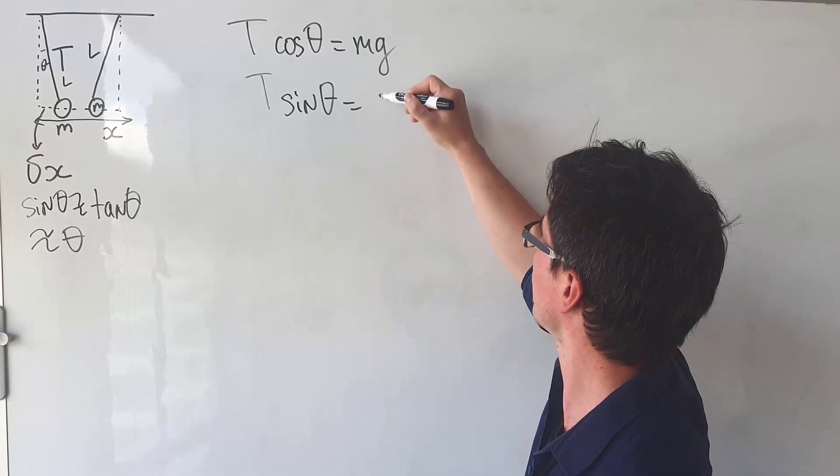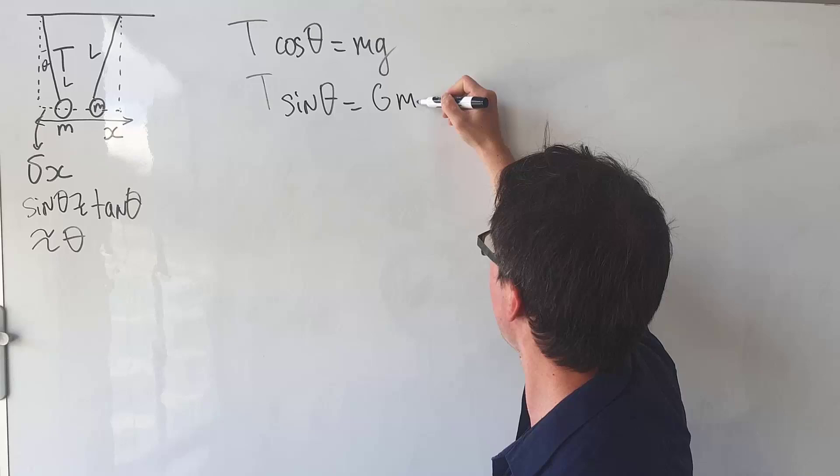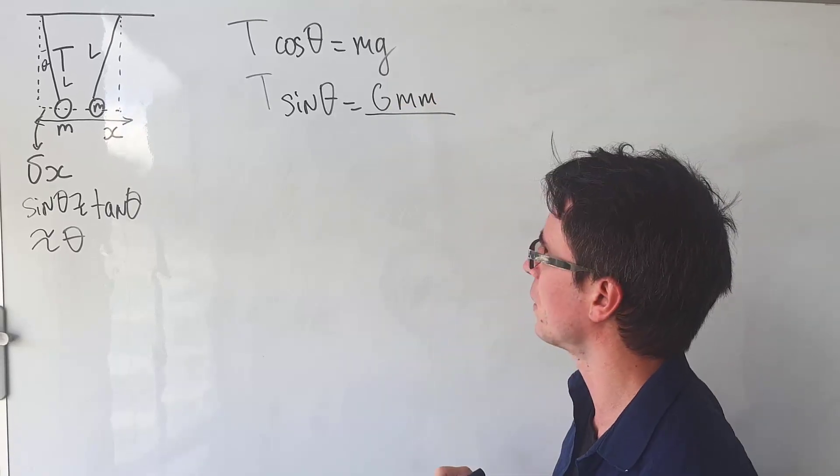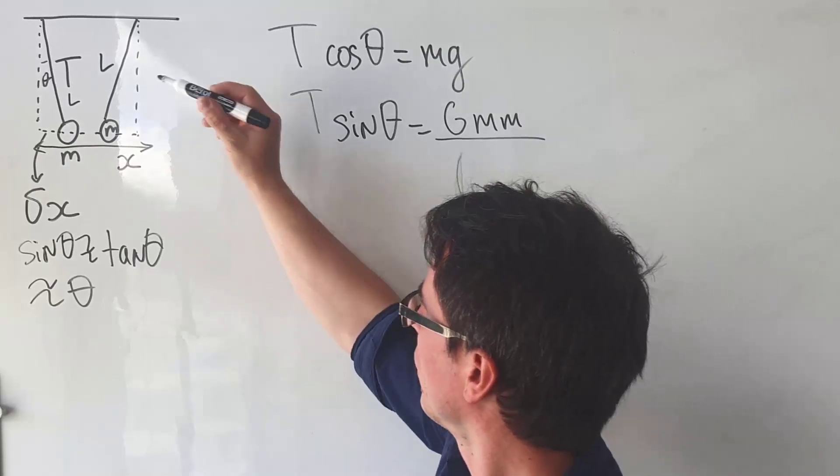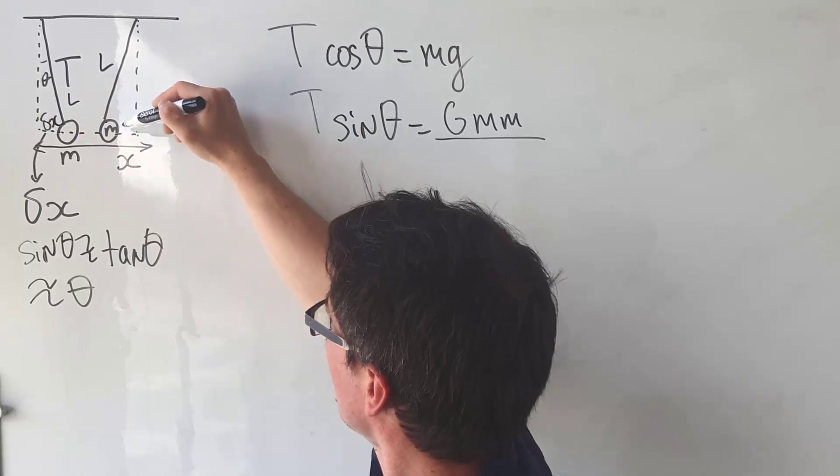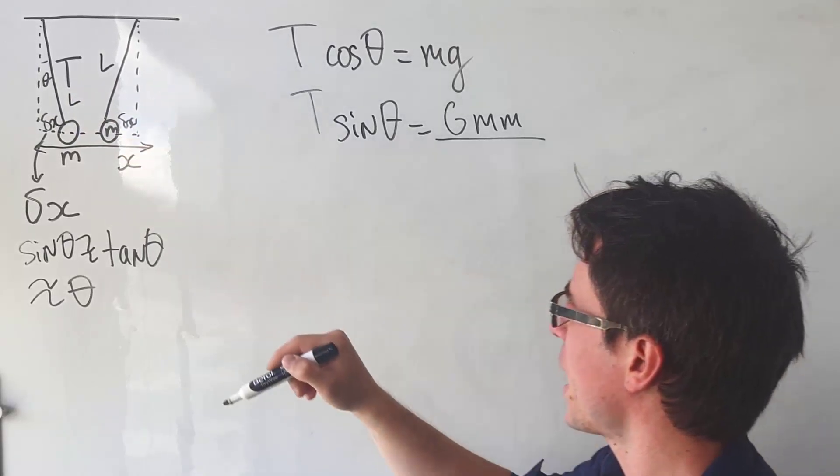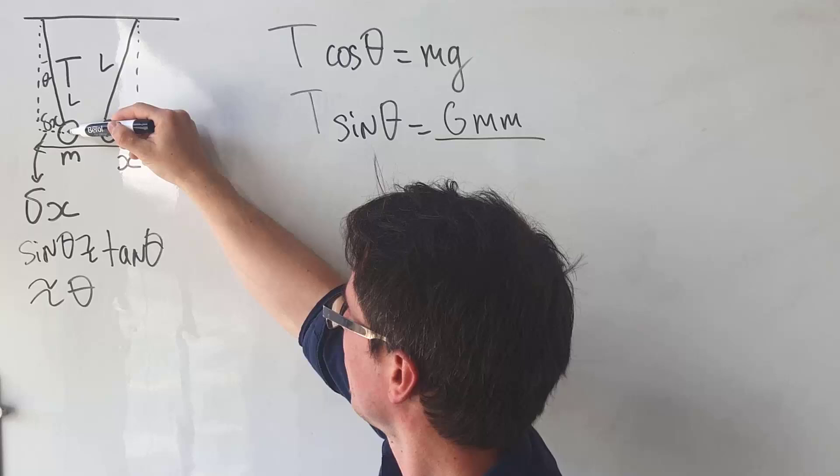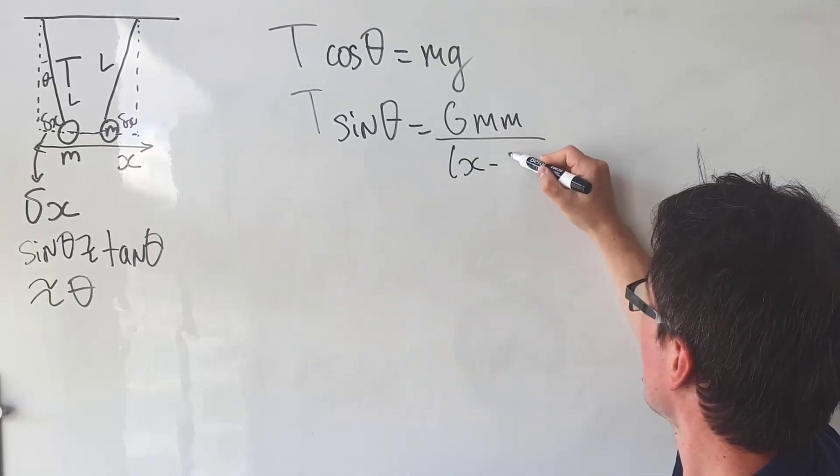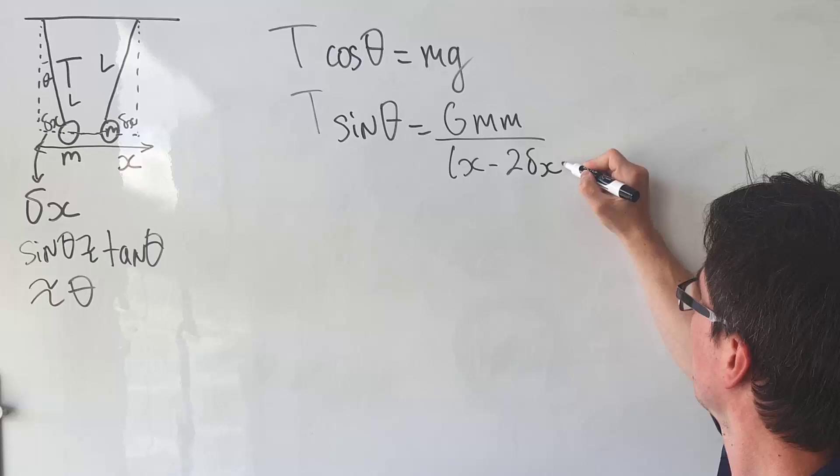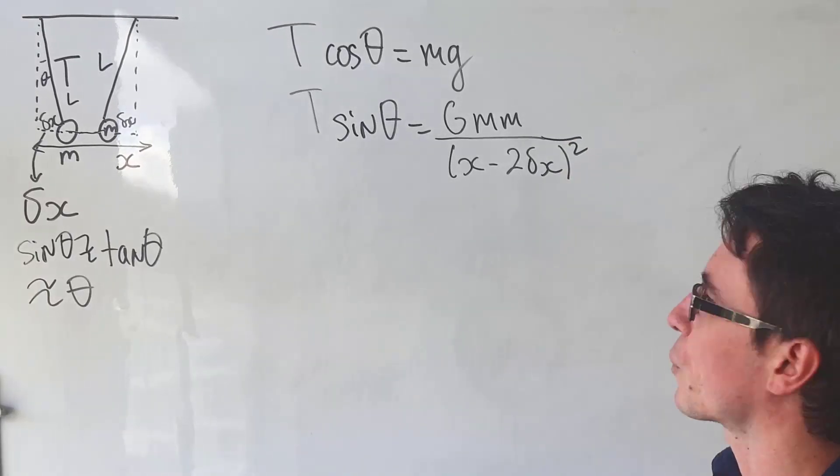The gravitational force is gmm over r squared. So that's going to be gmm over the distance squared. Now, if this here is delta x and if this here is delta x, then the distance between the centers will just be x take away twice delta x and then square.